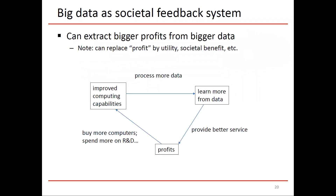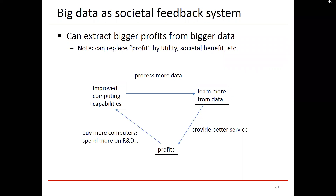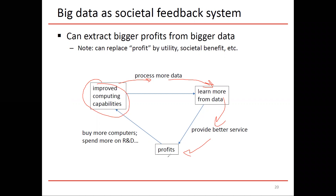I like thinking about big data as part of a societal feedback loop. We can extract bigger profits — or utility, social benefit, however you want to call it — from bigger data sets. Over time, we have improved computing capabilities, which allows us to process more data. Because we process more data, we can learn more, and we can provide better service, leading to more profits. Those profits can be invested in buying more computers, spending more on research and development, collecting more data, leading to improved computing capabilities, and the feedback loop continues.